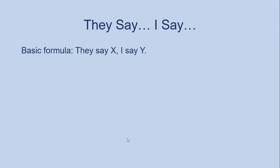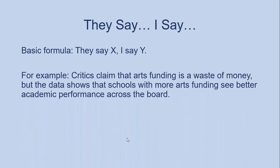Next we've got They Say, I Say — actually the title of a really popular composition textbook. This is a really central way of making an argument. Essentially this is about identifying a position held by someone else and then responding to it, so it's really useful for things like counter-arguments or confronting misconceptions. Our example might be: 'Critics claim that arts funding is a waste of money, but the data shows that schools with more arts funding see better academic performance across the board.' We've got 'critics claim' — that's They Say — and 'the data shows' — that's I Say.